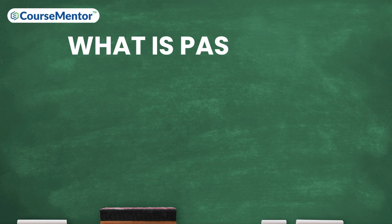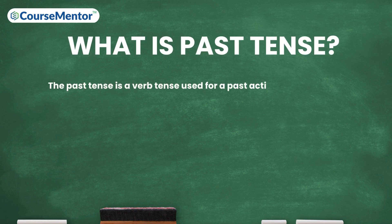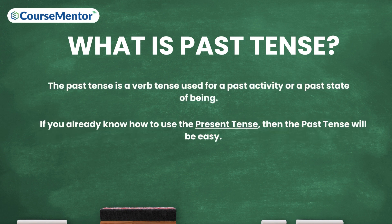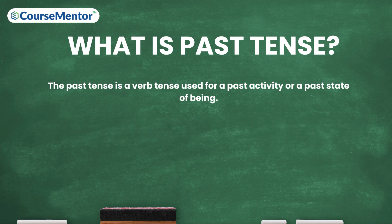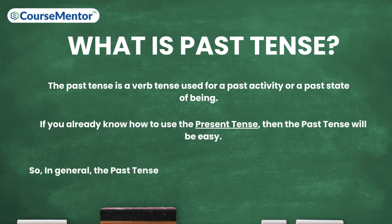So what is past tense? The past tense is a verb tense used for a past activity or a past state of being. If you already know how to use the present tense, then the past tense will be easy. If you don't know about the present tense, tap on the i button to watch the present tense — the link is also mentioned in the description box.